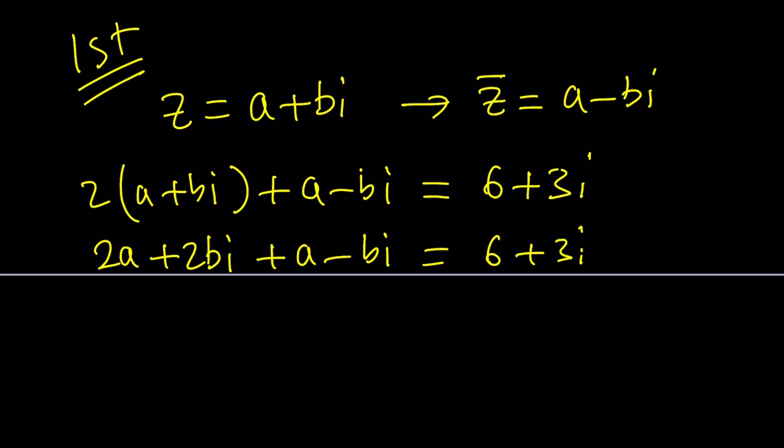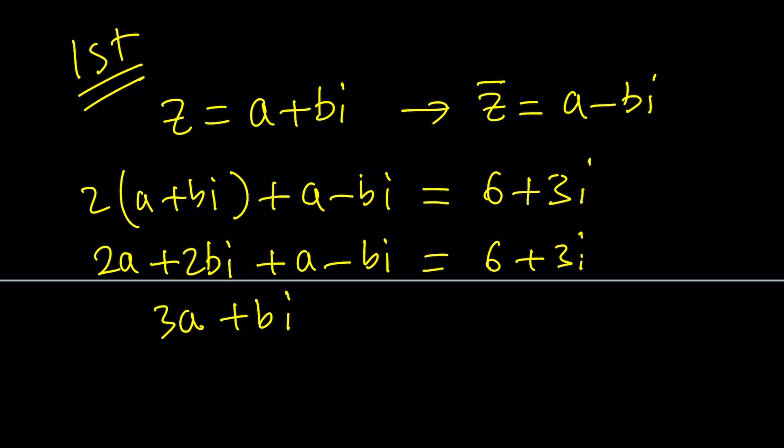2a plus a. a is a real number obviously. So that's going to be 3a and b is also a real number. 2bi minus bi is going to be plus bi and this equals 6 plus 3i.